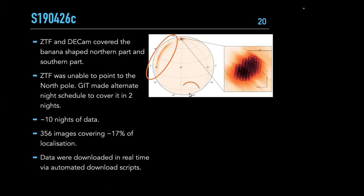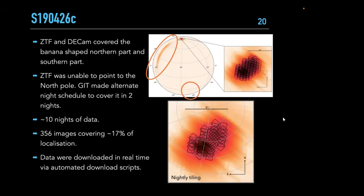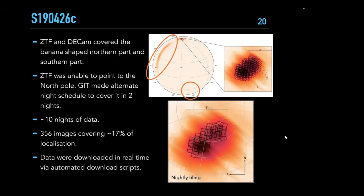But the highest-probability region near the north pole was left uncovered because ZTF couldn't point there. That's where GIT came in — we tiled the northern polar cap with GIT, spending different nights ensuring full evaluation of any detected candidate. Despite being the smallest field-of-view telescope in the network, we covered about 17% of the localization probability.